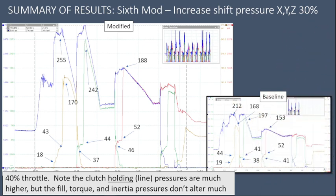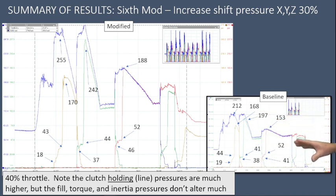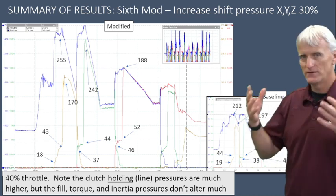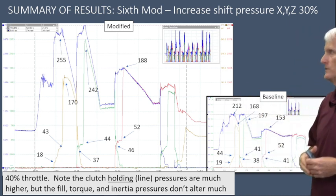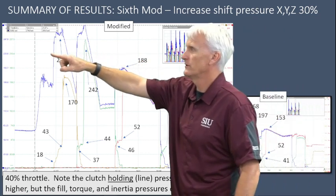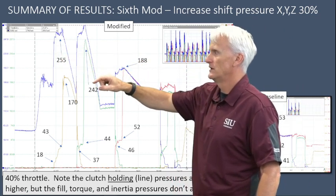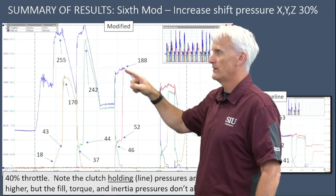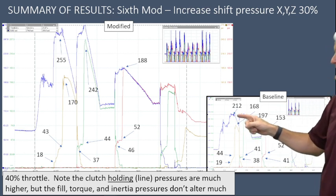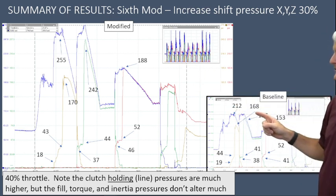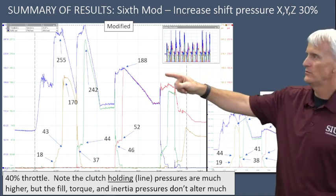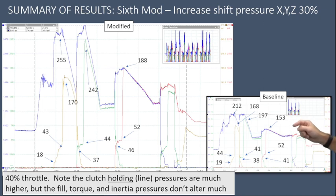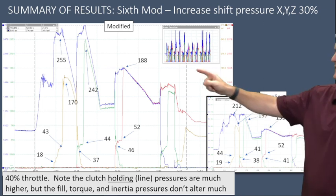The results are significant. Looking at the baseline vs. modified summary: the 1234 clutch went up to 255 psi, the 26 clutch really didn't change much — stayed at 170, the 35R went up to 242, and the 456 went up to 188. Comparing to baseline: we went from 212 to 255, 168 to 170 (only up a couple PSI), 197 to 242, and 153 to 188 on the 456. So pressures went up — but those were the pressures after the shift is completed.